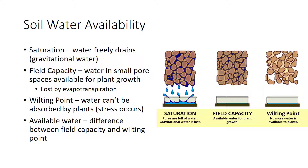This water may be lost from the soil surface by evaporation or from the leaf surface by transpiration. Together, these are called evapotranspiration. When water can no longer be absorbed by the plant, moisture stress occurs, causing the plant to wilt. At this stage, the plant is said to be at its wilting point. The difference between soil moisture at field capacity and the wilting point is called the available water.